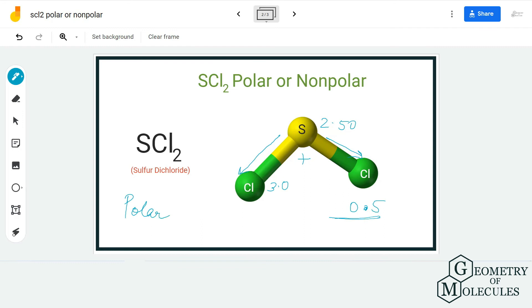So sulfur dichloride is a polar molecule because of the bent molecular geometry and the lone pairs that are present on the central atom.